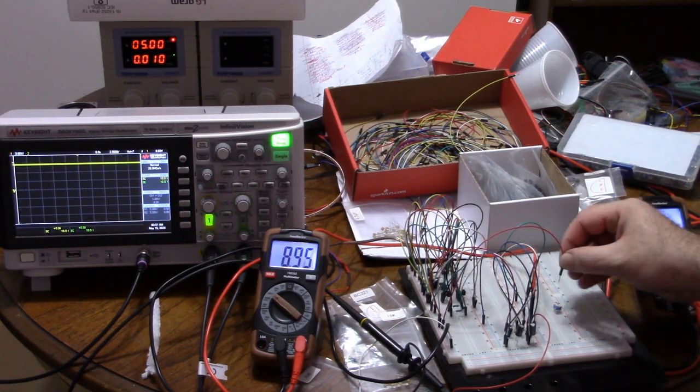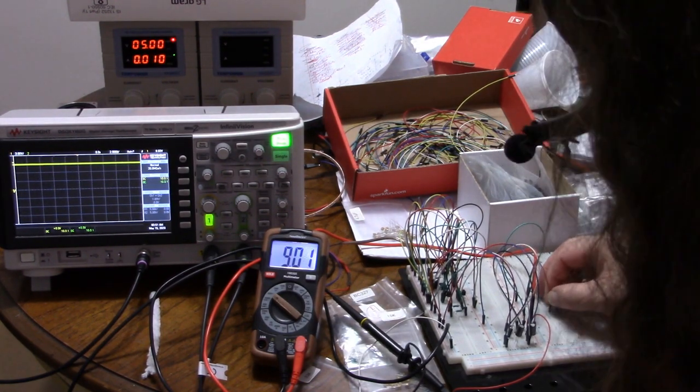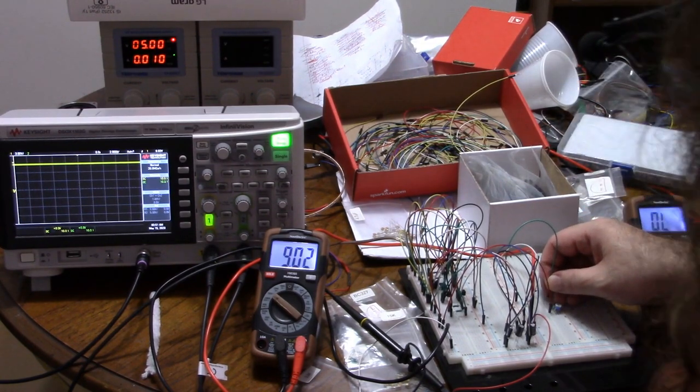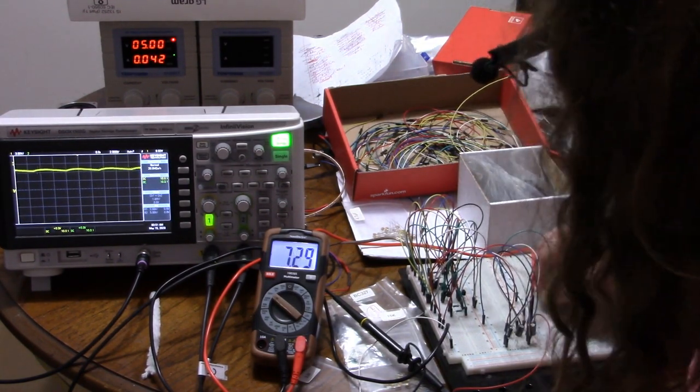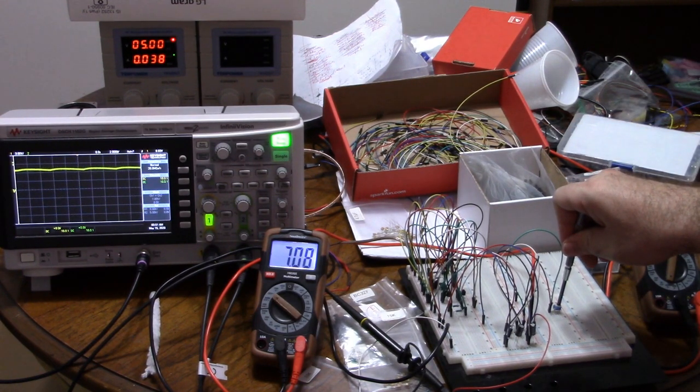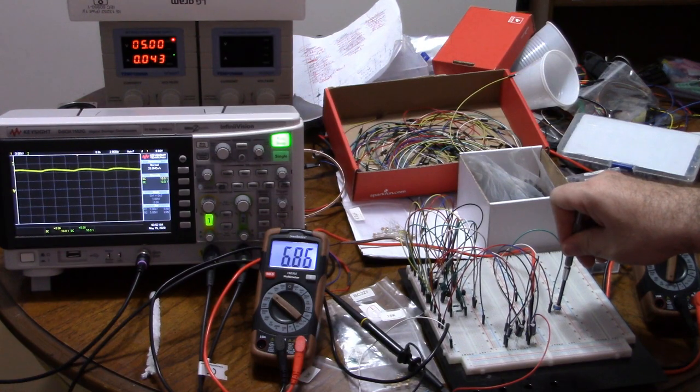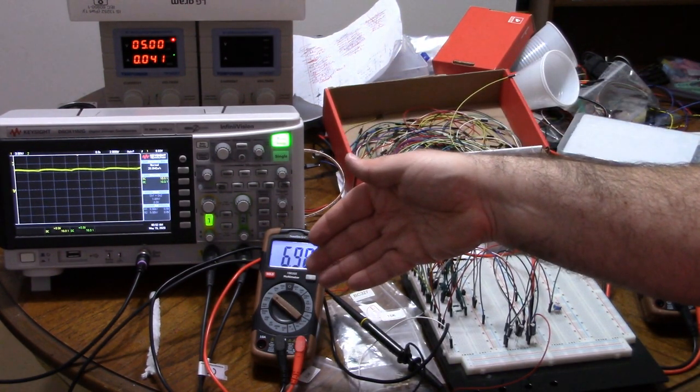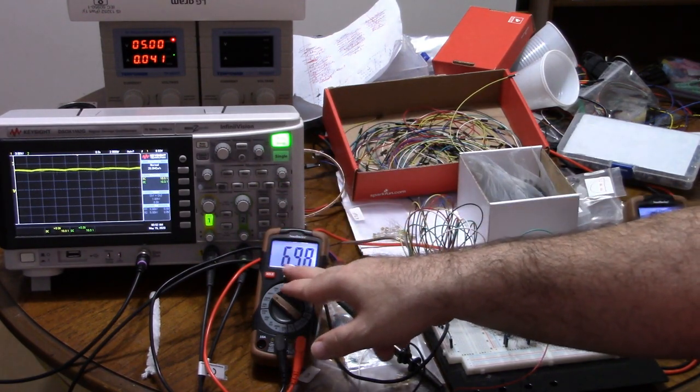Instead of a 4.7 kohm load, let's put this load. It's a potentiometer. And I'm going to adjust it until I get 7 volts. Pretty much on 7 volts. Because 7 volts is what I've been usually using to give my op amps more headroom. So that's really all I need.